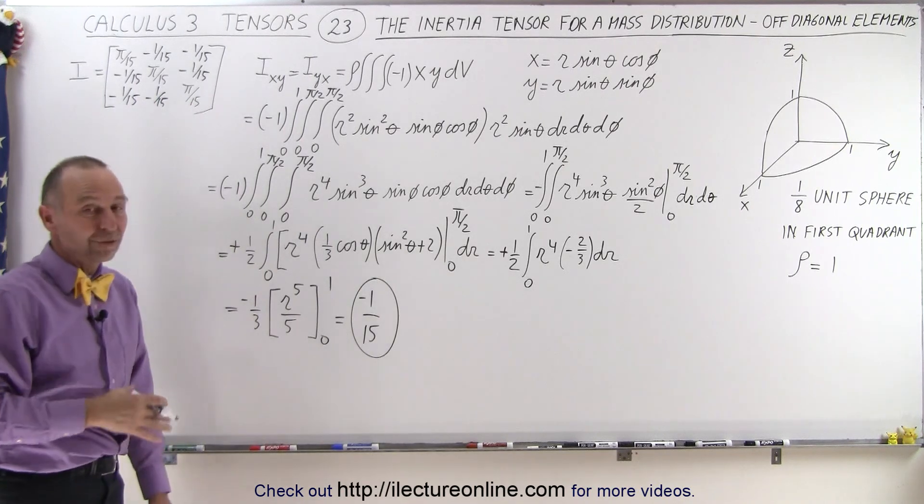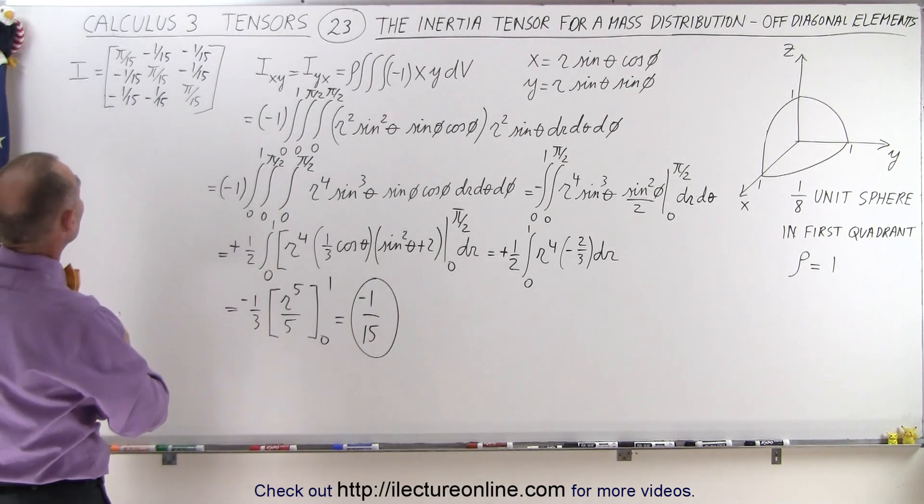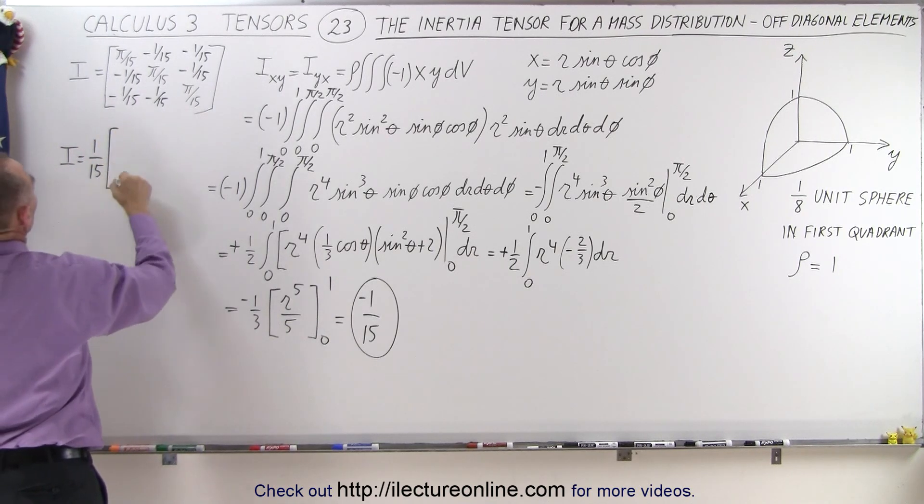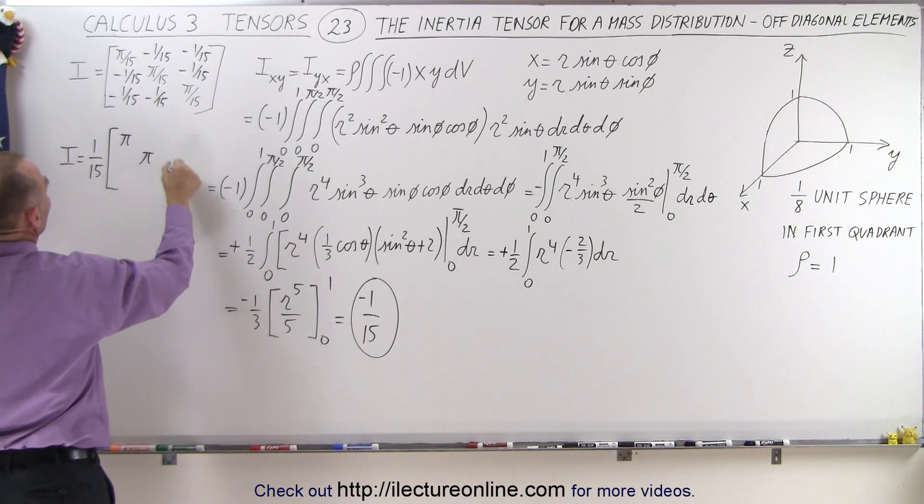So essentially, then of course, if you want to factor out a 1 over 15, we get I is equal to 1 over 15, and then the elements become pi along the diagonal, and minus 1, like that.